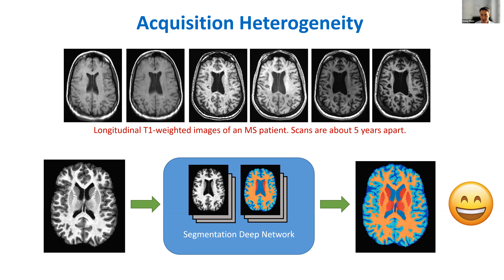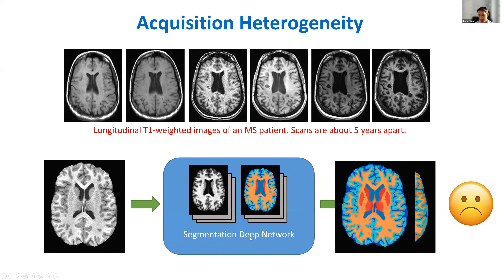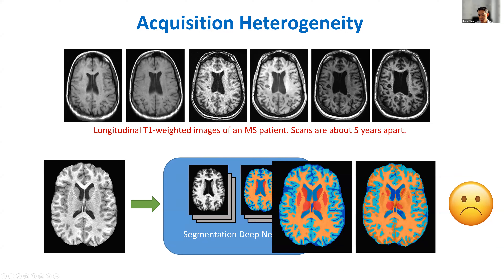There are different types of scanners — 1.5 Tesla, 3 Tesla — and different scanner manufacturers, and all of these variations in manufacturer and pulse sequences result in notable changes in contrast. As many of you know, when you have a segmentation deep network with training pairs, if you feed it data within your training distribution you get a very reasonable result. But if you feed it something outside your training data, you get an inaccurate result. This is the problem of the algorithm not generalizing outside its training distribution — here's what the segmentation should look like, and here's what you get when the test data is outside the training distribution.